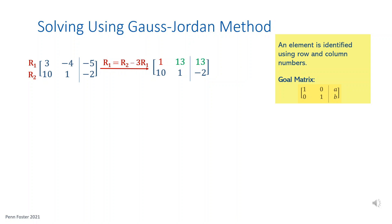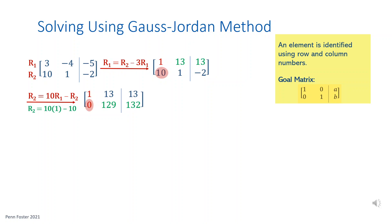Now we have 1 in the top of the diagonal. Next, work to have a 0 in the element right below the diagonal 1. Multiply the first row times 10, then subtract the second row from the product. This time the first row will remain as is, but the second row will be updated. 10 times 1 is 10, then 10 minus 10 is 0. Move on to the next element: 10 times 13 is 130, then 130 minus 1 is 129. Finally, 10 times the constant 13 is 130, then 130 minus negative 2 is 132. Now we have a 0 right under the 1 in column 1.